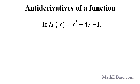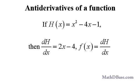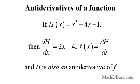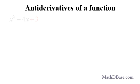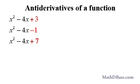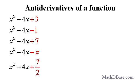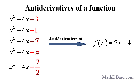If another function h is defined as x squared minus 4x minus 1, then f is also the derivative of h, and h is also an antiderivative of f. So all of the functions x squared minus 4x plus 3, x squared minus 4x minus 1, x squared minus 4x plus 7, x squared minus 4x plus pi, and x squared minus 4x plus 7 over 2, which differ only by a constant term, are antiderivatives of f.